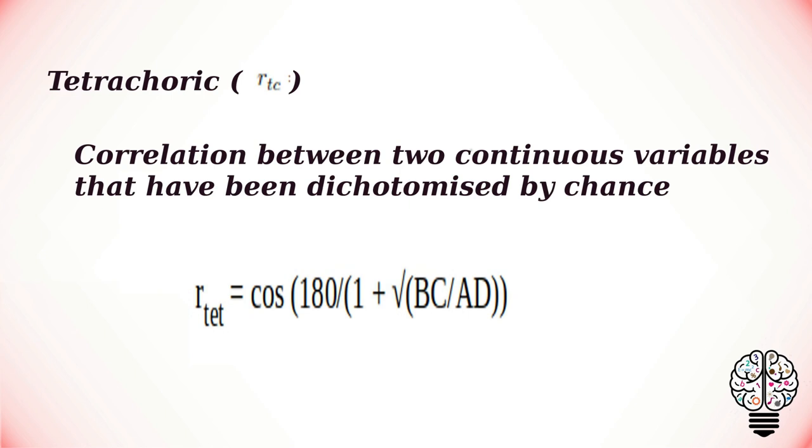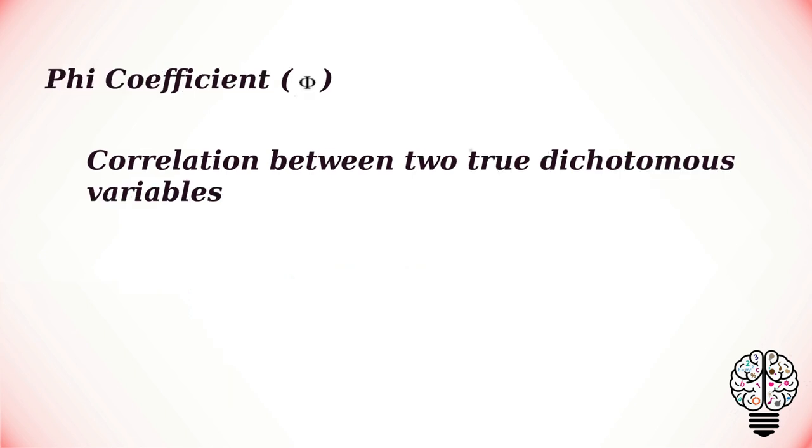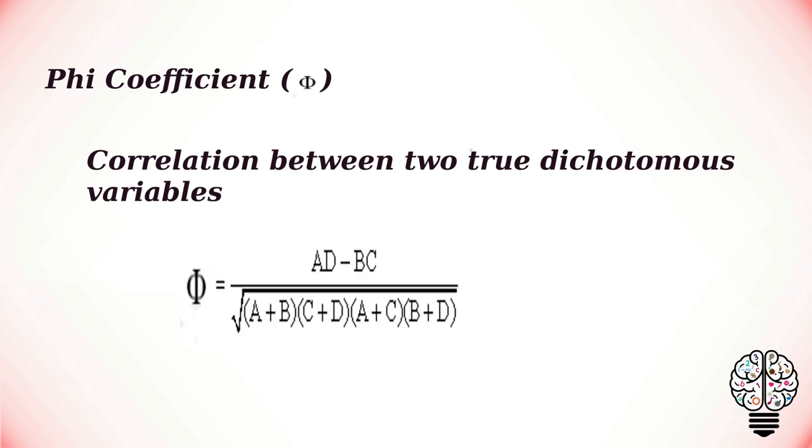Phi coefficient is a measure of association for two binary variables. For example, correlation between male or female and alive or dead. For a two-by-two contingency table where A, B, C, and D represent the observation frequencies, the formula for phi is as follows.